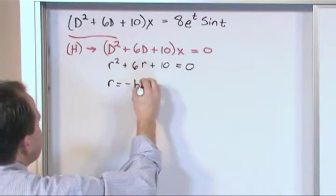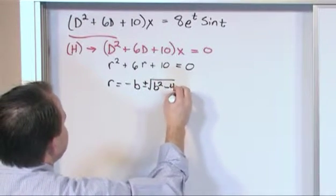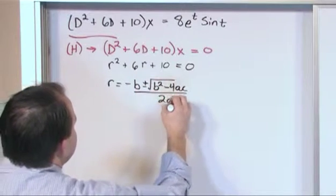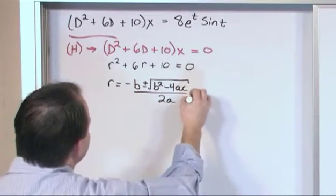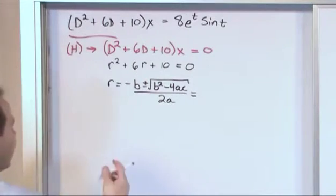r equals negative b plus or minus square root of b squared minus 4ac all over 2a. I know it's a little bit old school to do all this stuff by hand, but it's good to know where everything comes from.